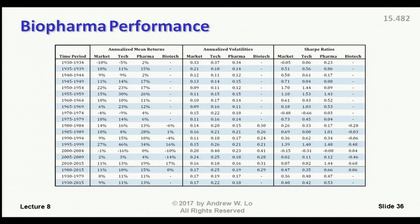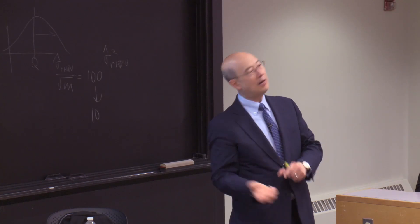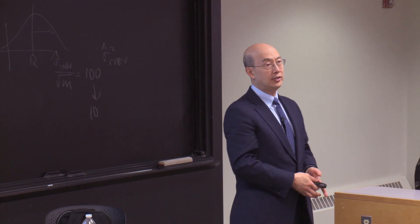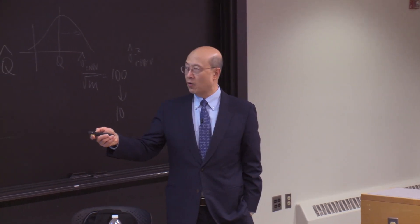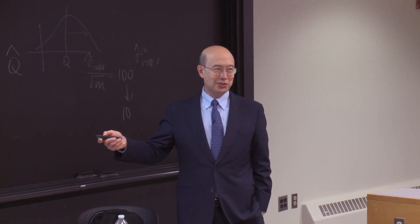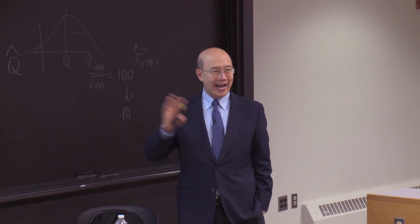This goes back to the narrative I started with at the beginning of the class. Pharma is getting out of early-stage R&D — they're letting the biotech sector do that — and they're coming in at the later stage. And guess what? It's working. Their Sharpe ratio is fantastic.